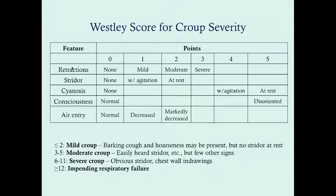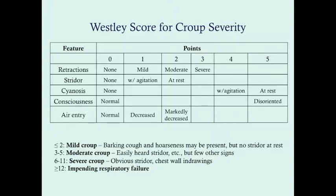The Wesley score has five parameters: retractions (none, mild, moderate, or severe), degree of stridor, cyanosis, level of consciousness, and air entry. If a patient is having any cyanosis and is disoriented, that puts them at a score of nine — those patients you'd hospitalize anyway. You can use this score as evidence-based support for admission decisions, but generally it's common sense based on how much respiratory distress the patient is in. Usually you can rely on your intuition, and most of the time in croup — and virtually never in spasmodic croup — will you need to admit the patient.